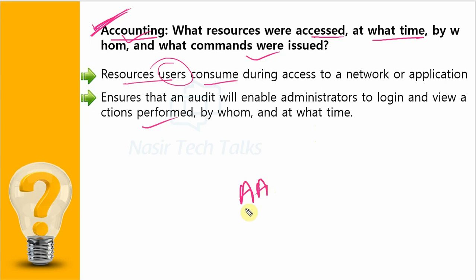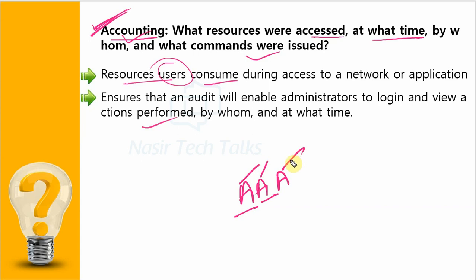So AAA means Authentication, Authorization and Accounting. Simple concept: first, Authentication — 'Who are you?' — meaning username and credential, right or wrong. Authorization — 'What level are you?' — meaning what level of access and what activities are permitted to you.